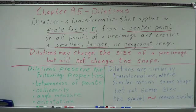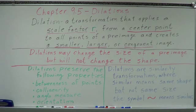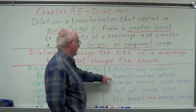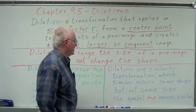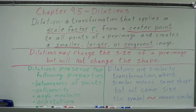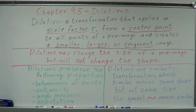Dilations also preserve orientation — the order of the points. If I go left around the pre-image, I can go left around the image with the same order of points. What is not maintained is the distance measures — that's your size. Dilations are known as similarity transformations, where similar means same shape but not same size. The squiggly symbol means similar; over an equal sign it means congruent, meaning same shape and same size.